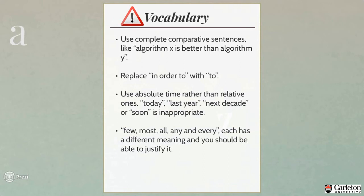There are a couple of tips on the vocabulary used in technical documents. English may not be your first language; however, it is a very rich language with a lot of alternatives for each word. It is common to use these alternatives when writing a document. It is always good to use a thesaurus to find synonyms, but make sure to look up their meanings in the dictionary. Keep in mind that it is always better to write short and simple sentences. Use complete comparative sentences, like "algorithm X is better than algorithm Y," not just "algorithm X is better" — better than what?